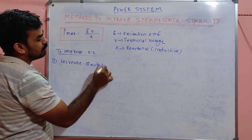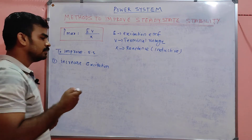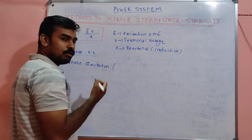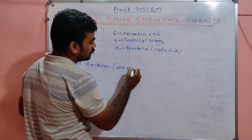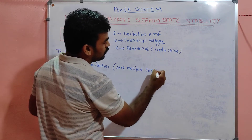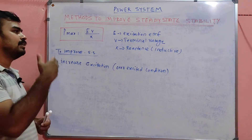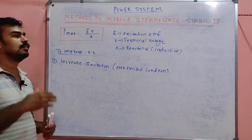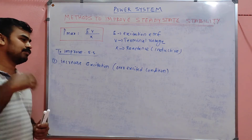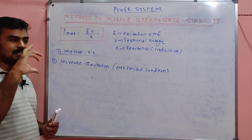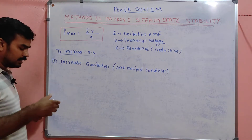If we increase the excitation, the excitation EMF E will be increased, meaning the machine or alternator is subjected to an over-excited condition. So if we prefer the over-excited condition, E will be higher and P_max will be higher. However, this is not practically the primary approach we deal with on the transmission line side.